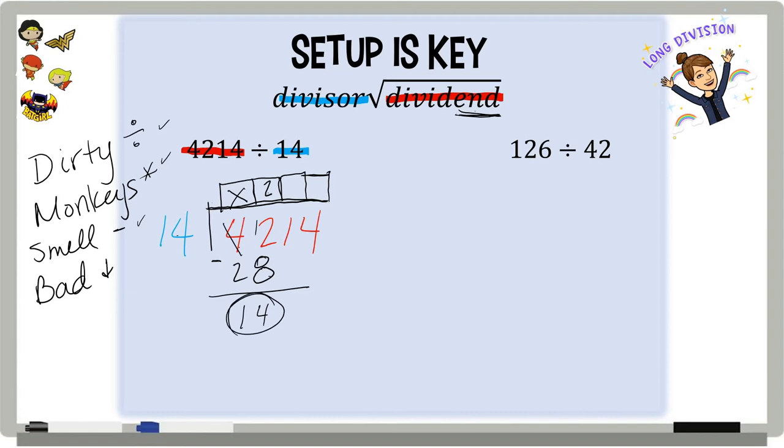If the number I get when I subtract is equal to or larger than my divisor, that means I could have made another group, which means I need to change my numbers. So that means I need to change this number up here, up top, because I can make more than two groups. I can actually make, I have 14 more here, so I can make another group. So in this case, it's not two groups of 14 that I can make. It's actually three. And it's okay. That's why we have these beautiful things called erasers.